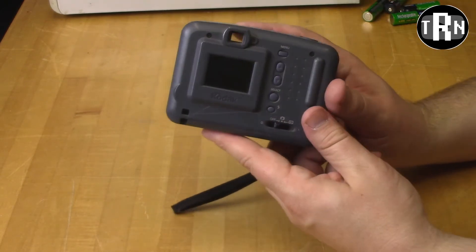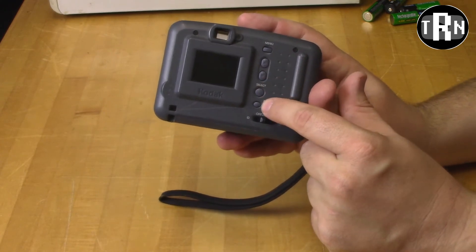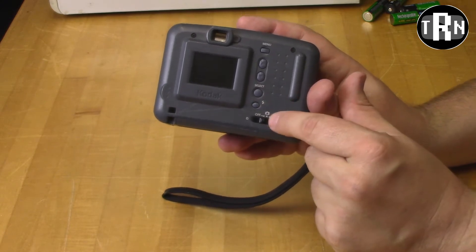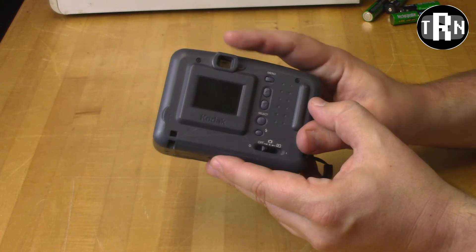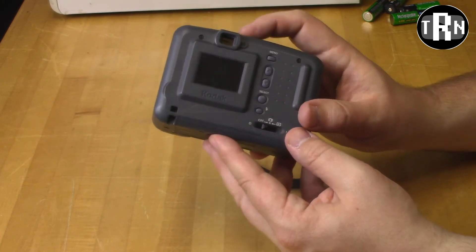As far as the back of it goes, you can see we got our menu button, our up and down, select, flash on and off or probably flash on and off auto. Switches to go back and forth. Our optical viewfinder and a little tiny light next to it. I thought it was a button at first, but it's just a light.